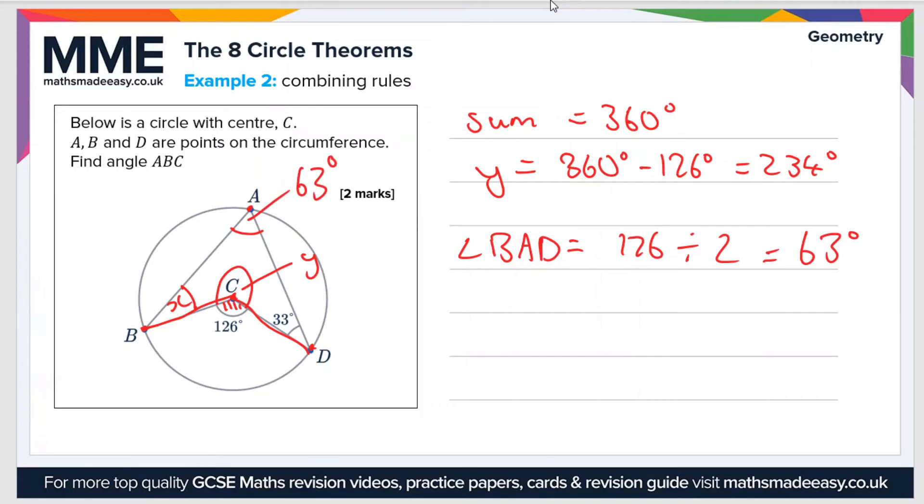And that gives us a value of 63 degrees. So this angle here is 63 degrees, and then we have three of the four angles in the quadrilateral, which allows us to work out the value of x or ABC.